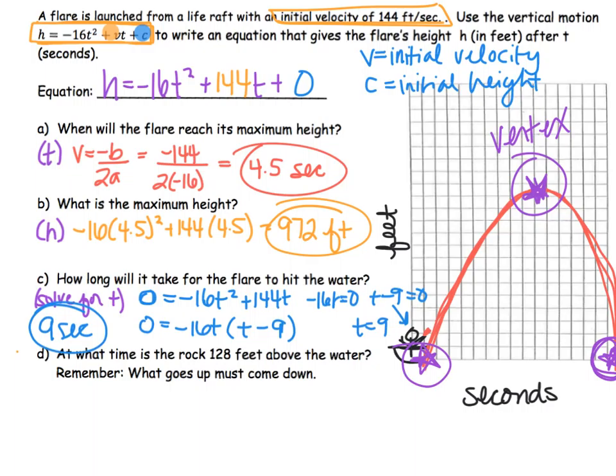Last but not least, it says at what time is the rock 128 feet above the water? So if we know our vertex is at 972 feet, 128 feet would be like here. Notice that we should get two answers because it's two spots when it goes up and when it goes down.